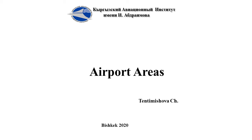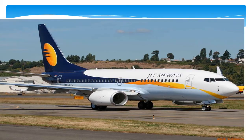Good morning students and teachers. Today we will talk about the airport areas. We usually divide airports into international and domestic airports. An international airport is an airport with customs and border control facilities, enabling passengers to travel between countries. International airports are usually larger than domestic airports and often feature longer runways and facilities to accommodate heavy aircraft used for international and intercontinental travel. International airports also host domestic flights.